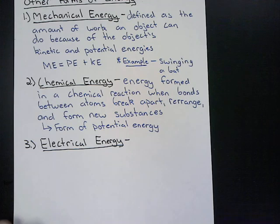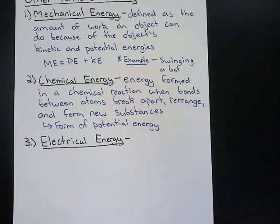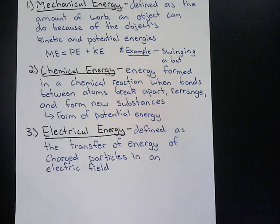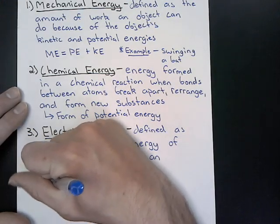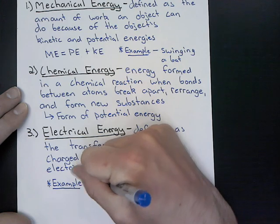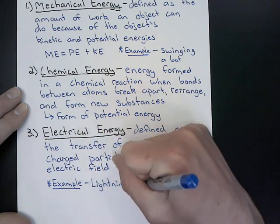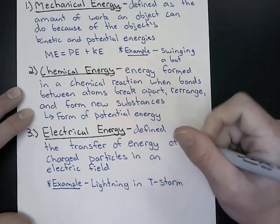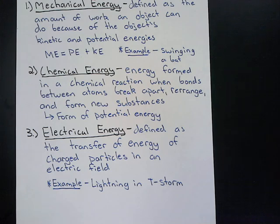The last type of energy we need to talk about is electrical energy. Electrical energy is defined as the transfer of energy of a charged particle in an electrical field. A great example of electrical energy is lightning in a thunderstorm, where energy is transferred through a shift in charged particles.